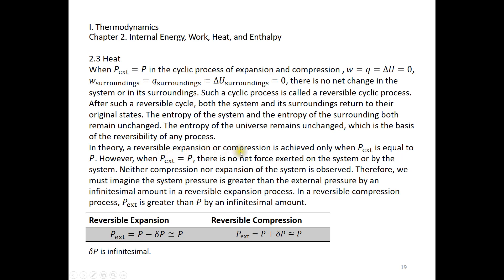In theory, a reversible expansion or compression is achieved only when P_external = P. When P_external = P, there is no net force. So we imagine that during expansion, the system pressure is just slightly greater than the external pressure; during compression, the system pressure is slightly smaller than the external pressure. The difference between system pressure and external pressure is infinitesimal — we use ΔP to denote this infinitesimal difference.